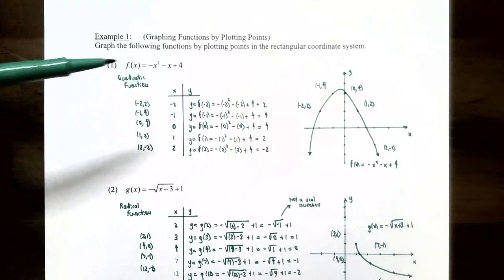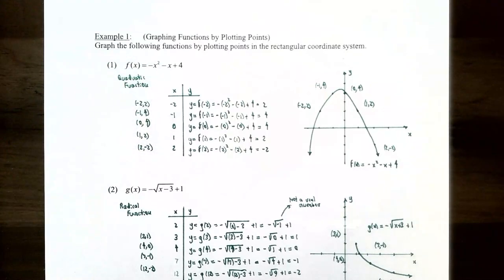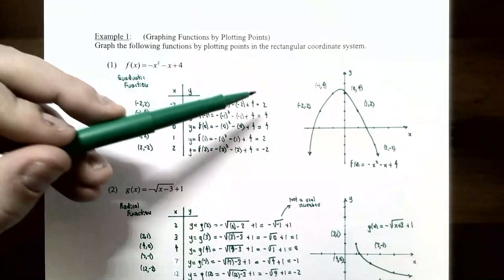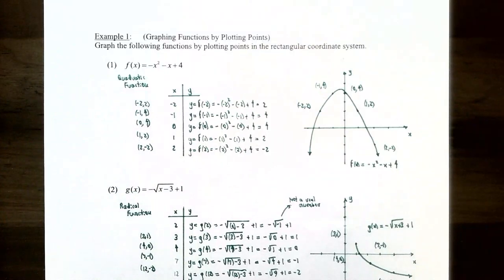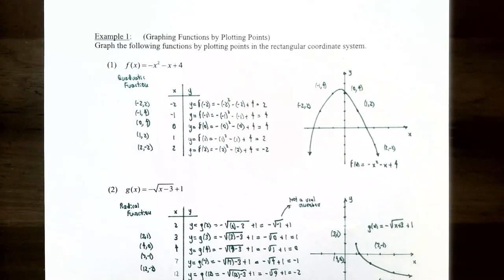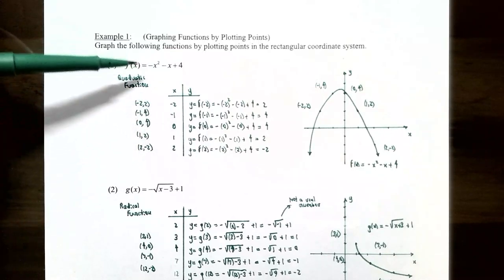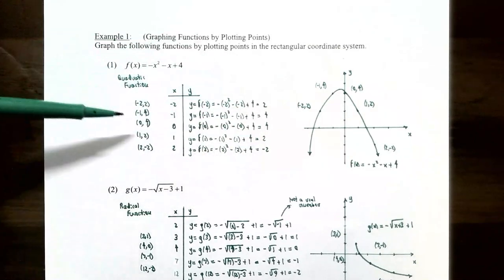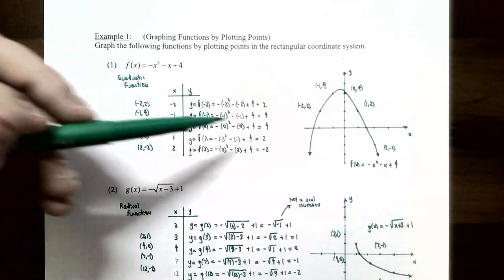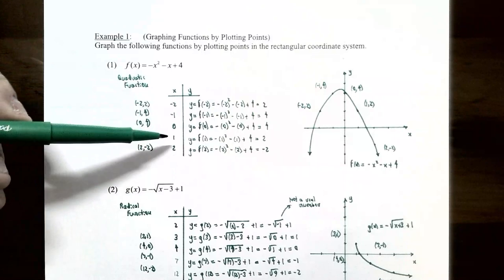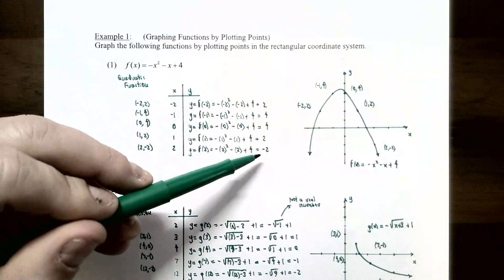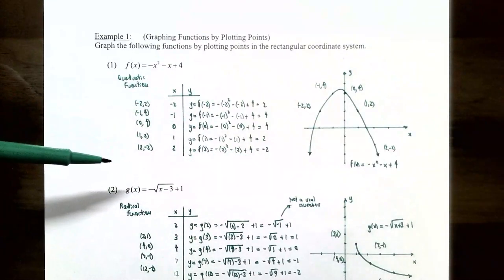When you plug in x = -2, the y value is 2, giving the ordered pair (-2, 2). When x = -1, the output is 4, so (-1, 4). When x = 0, the output is 4, giving (0, 4). When x = 1, the output is 2, so (1, 2). And when x = 2, the output is -2, giving the ordered pair (2, -2).